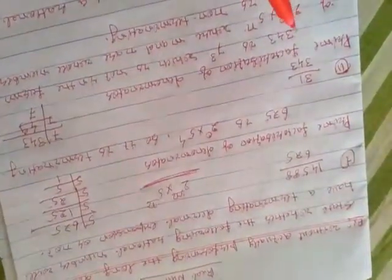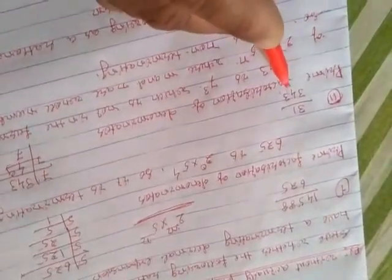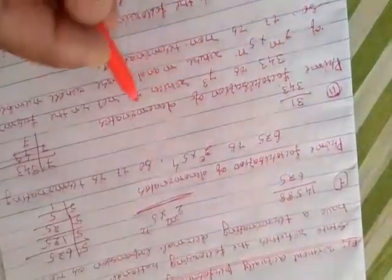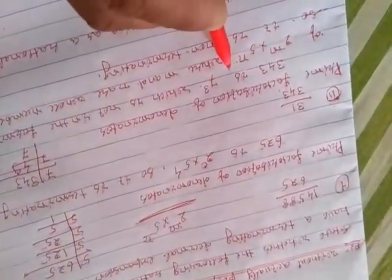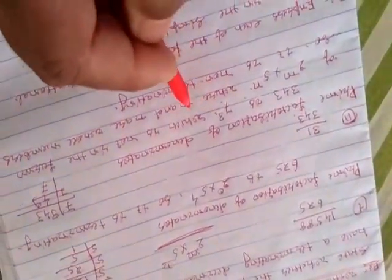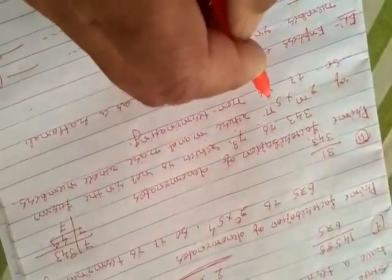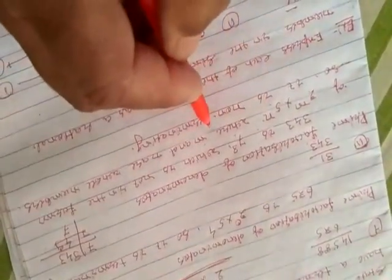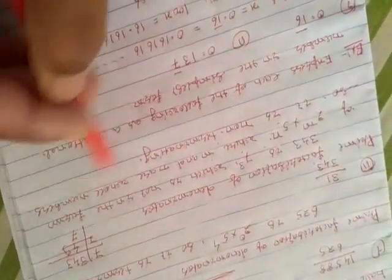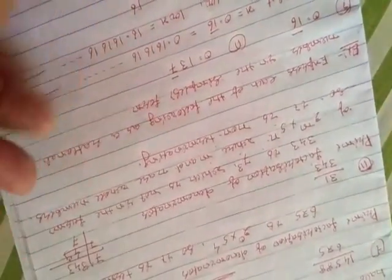Now take another example: 31 by 343. Again you do the prime factorization of the denominator 343. By doing prime factorization of 343, we get 7³, which is not in the form of 2^m × 5^n where m and n are whole numbers. So it is non-terminating.